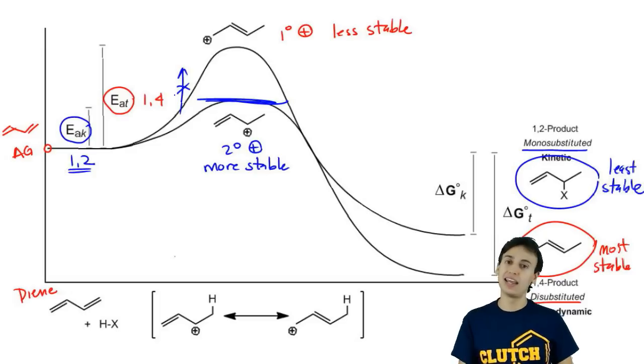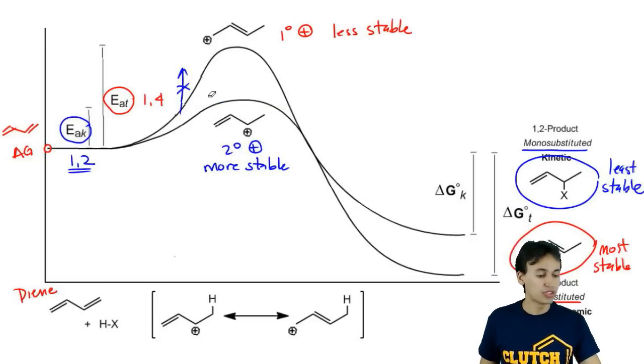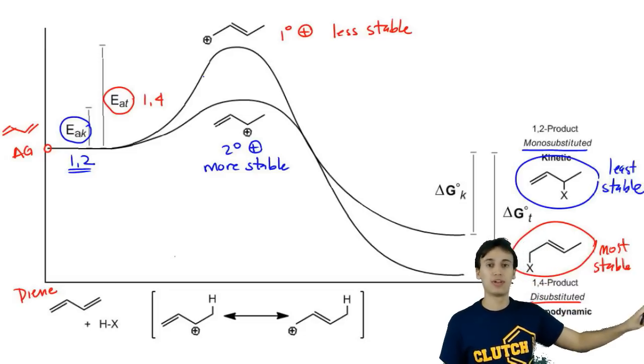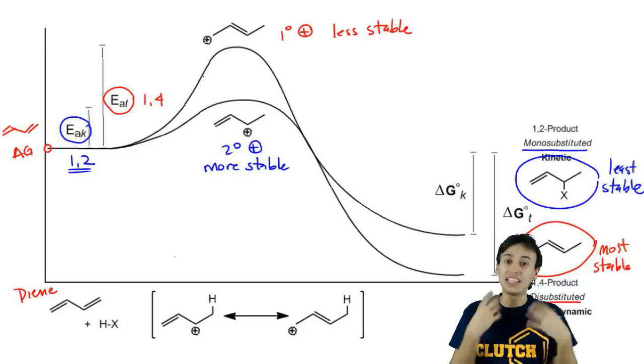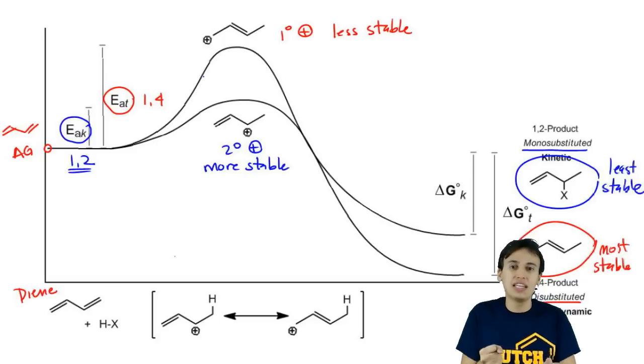That has to do with the names kinetic and thermodynamic. Kinetic means that it's the easiest one to make and it's the one that is formed the fastest. Whereas the thermodynamic product is going to be the one that is overall the most stable at the end. The thermodynamic product is usually going to require heat to make it possible because of the extra energy that you need to put in for the activation energy.